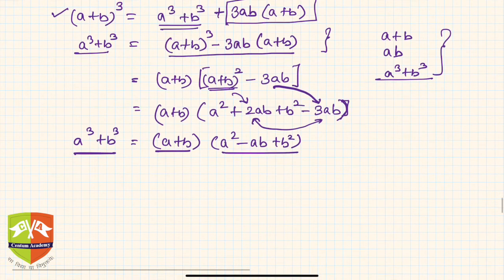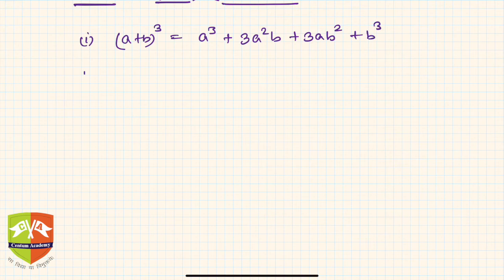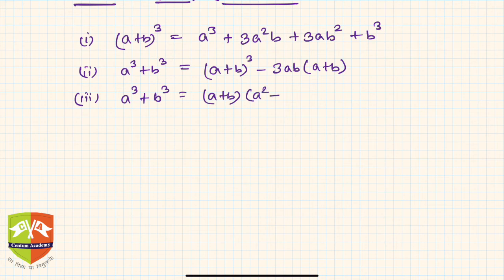So let us summarize what we learned in this session. Identity 1: (a + b)³ = a³ + 3a²b + 3ab² + b³. The same (a + b)³ manipulated gives Identity 2: a³ + b³ = (a + b)³ − 3ab(a + b). Identity 3: a³ + b³ = (a + b)(a² − ab + b²), which is the factorization of the sum of two cubes — useful for expressions like 6³ + 9³.